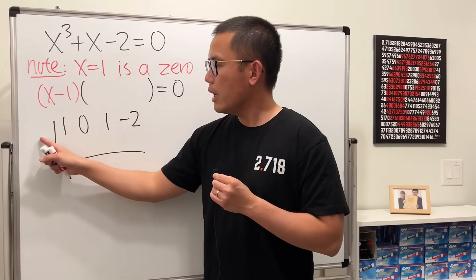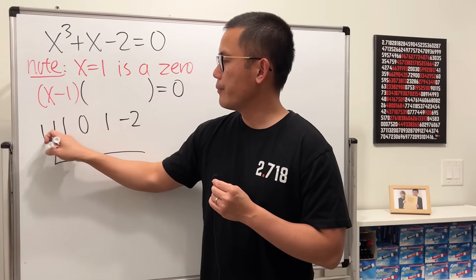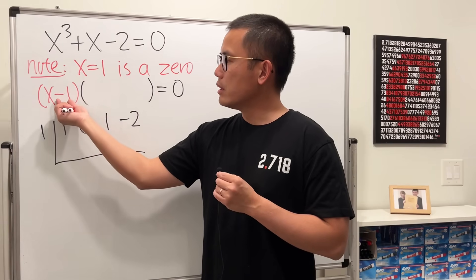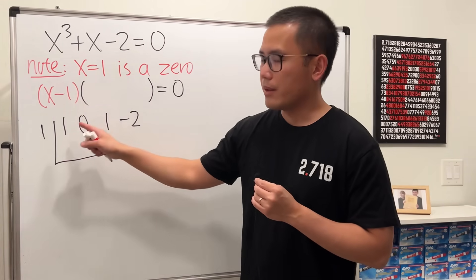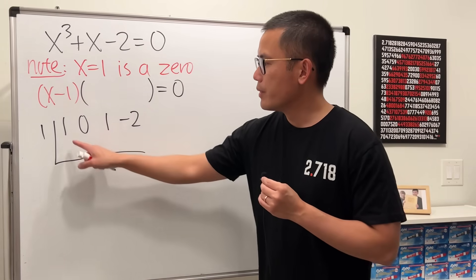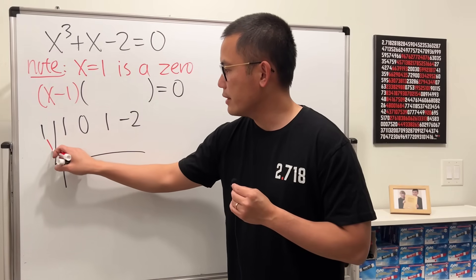Then for the number on the outside, when x equals 1, just put a 1 right here. If you look at this number, then you will have to do the opposite. All right, now we are ready.